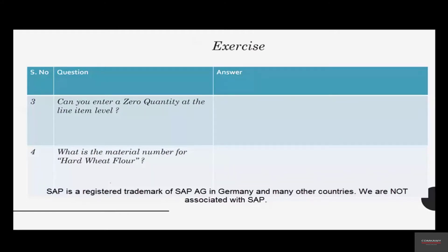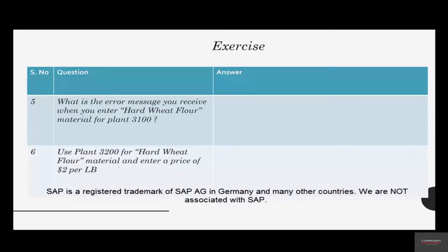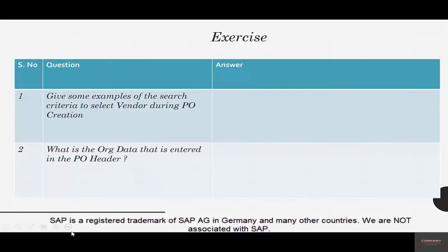The fourth question is: what is the material number for hard wheat flour? The fifth question is: when you enter hard wheat flour in plant 3100, it gives you an error message — what is that error message? The sixth question is: use plant 3200 for this material, enter a price of $2 per pound, and see what happens.